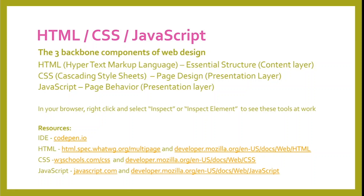HTML, CSS, and JavaScript are the three backbone components of web design. HTML is Hypertext Markup Language — it provides the essential structure or the content layer for websites. CSS is Cascading Style Sheets — it's the page design or presentation layer. JavaScript is the page behavior or another presentation layer of your website. You can actually see these tools at work in any browser on a website. If you're in your browser, you can right-click and select Inspect or Inspect Element to see these tools at work.